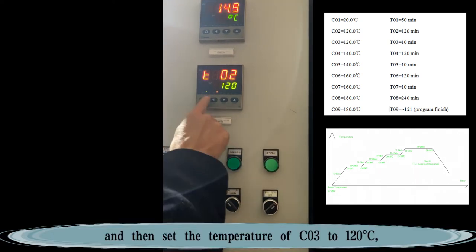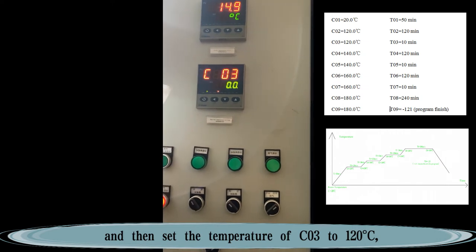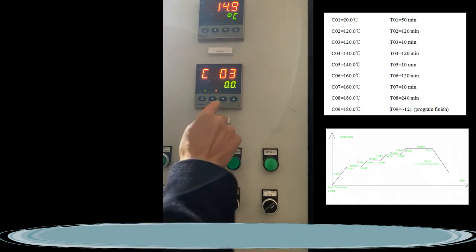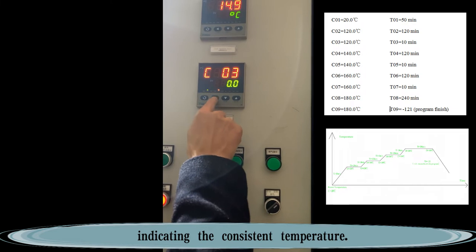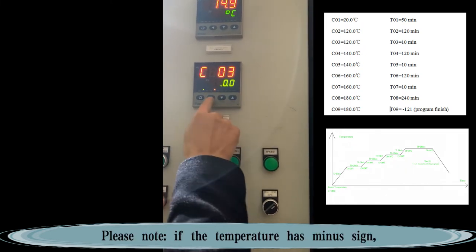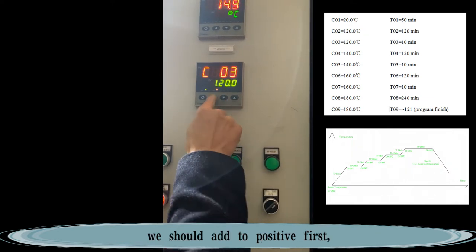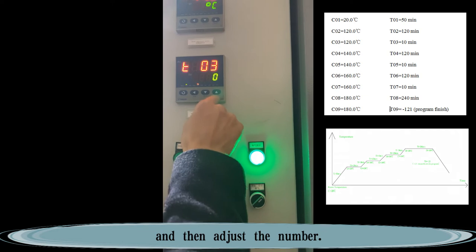Then set the temperature of CO3 to 120 degrees Celsius, indicating the consistent temperature. Please note, if the temperature has a minus sign, we should add to positive first and then adjust the number.